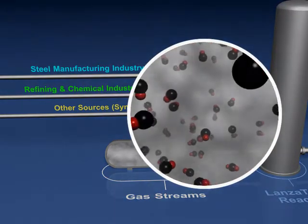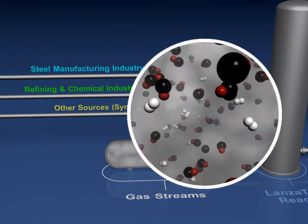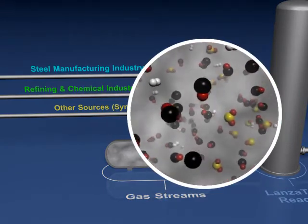The robust process is flexible to the hydrogen content in the input gas and tolerant of typical gas contaminants.